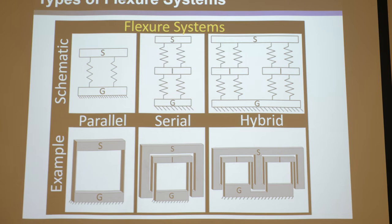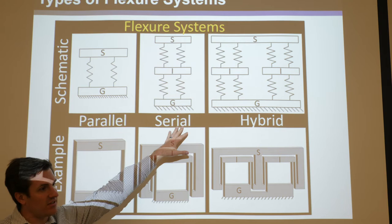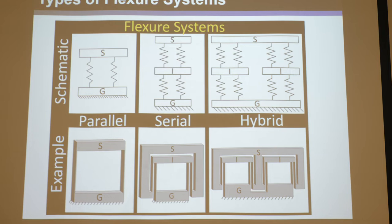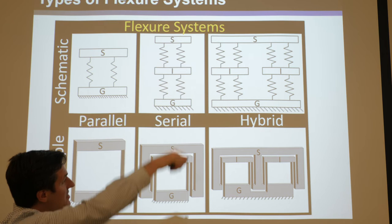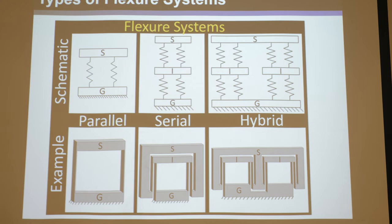Hybrid systems are basically anything that's not parallel or serial - a throwaway category that encompasses any combination of parallel and serial elements. You can see parallel modules in a serial limb, and two serial limbs in parallel. How you define these three categories - parallel, serial, and hybrid - is going to be critical to this course and will be covered in detail later.